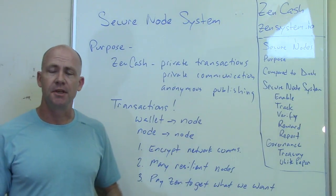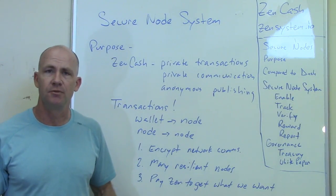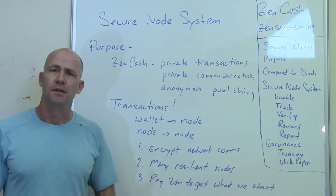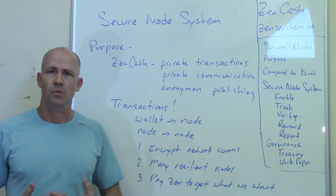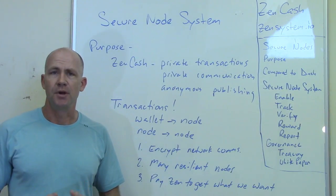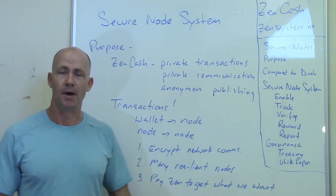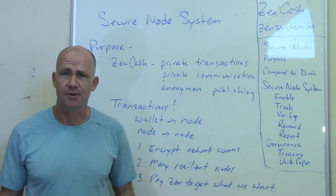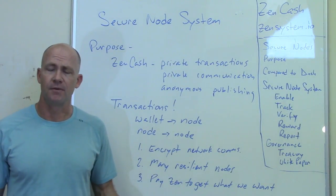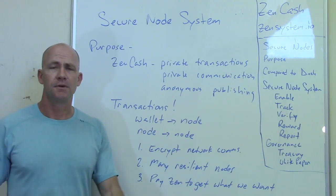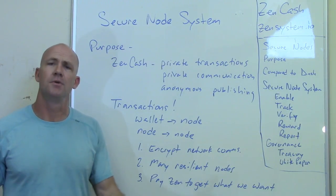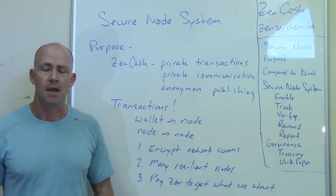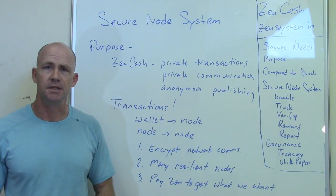We want to have many resilient nodes — a few thousand resilient nodes out there. That's one of the issues with many cryptocurrencies from a standpoint of resiliency. Bitcoin doesn't have that problem — it's got 7,000 to 10,000 nodes run by many different people all over the place. But some cryptocurrencies that don't focus as much on having many resilient nodes have only a few hundred, maybe at most 1,000, and it's not really clear what type of machines those systems are running on.